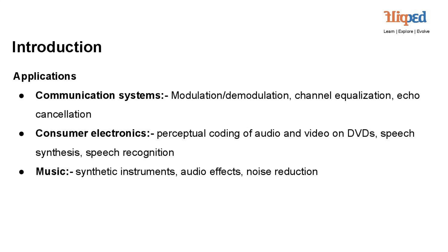Applications of signal processing include: 1. Communication Systems — Modulation and demodulation: Signal processing techniques are used to encode and decode information for efficient transmission over communication channels. Channel equalization is applied to compensate for distortion and interference during signal transmission. Echo cancellation techniques are used to remove echoes in voice communications, ensuring clear and echo-free audio.